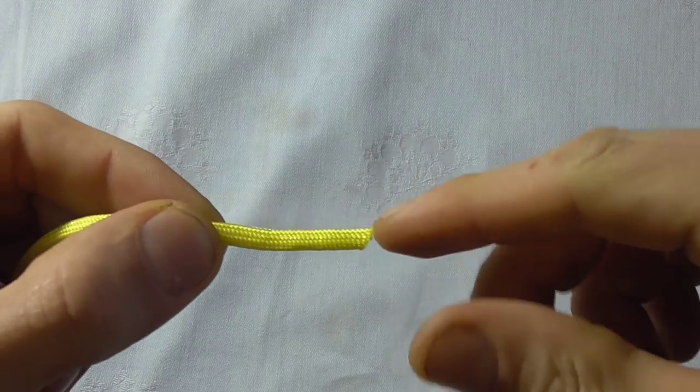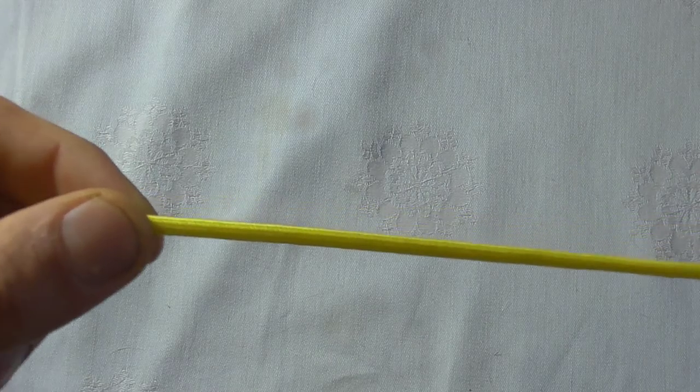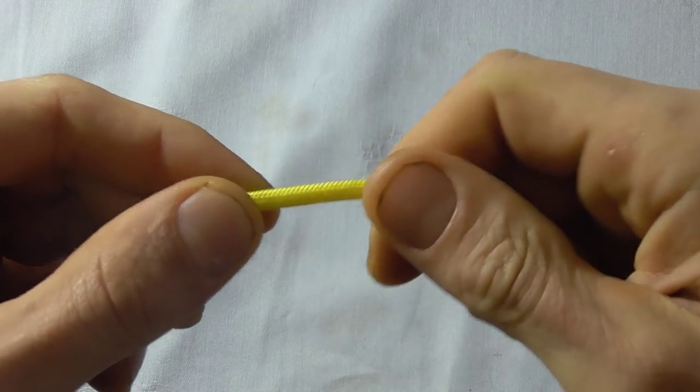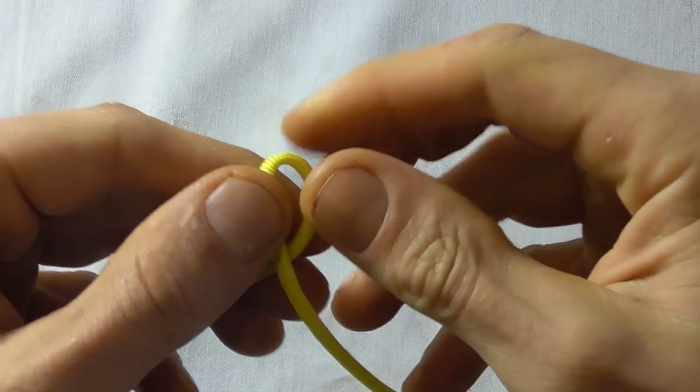To tie this knot, I just want to take my paracord and feed out about 25 to 30 centimeters and I just want to form an overhand loop.